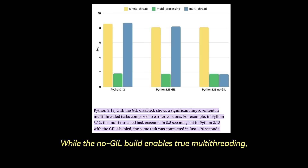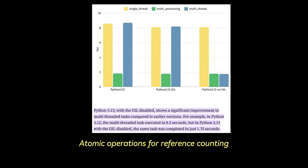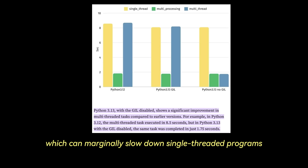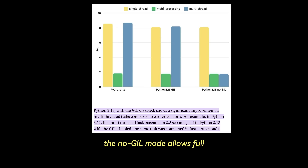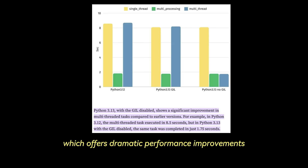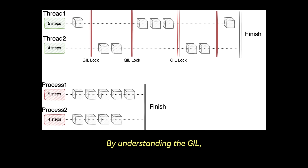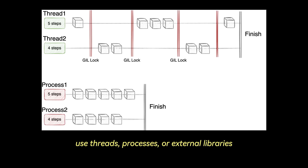While the no-GIL build enables true multi-threading, early benchmarks highlight certain trade-offs. Atomic operations for reference counting introduce some overhead, which can marginally slow down single-threaded programs. In scenarios with multiple threads executing CPU-bound tasks, the no-GIL mode allows full utilization of all CPU cores, offering dramatic performance improvements. By understanding the GIL, you can make smarter decisions about when to use threads, processes, or external libraries.